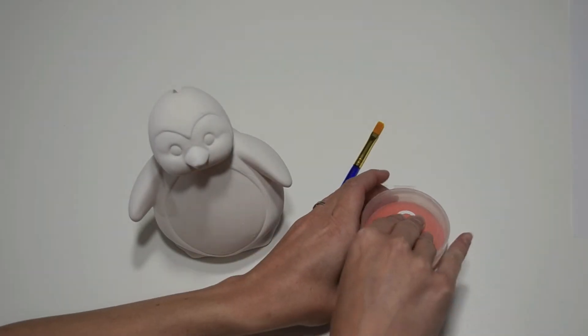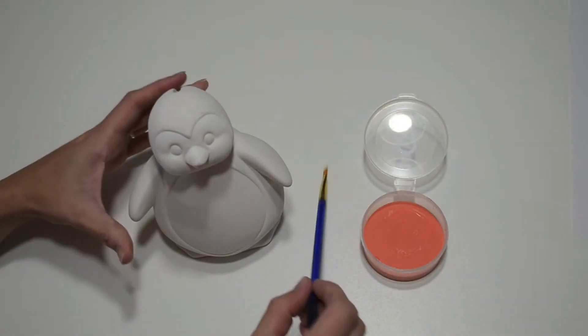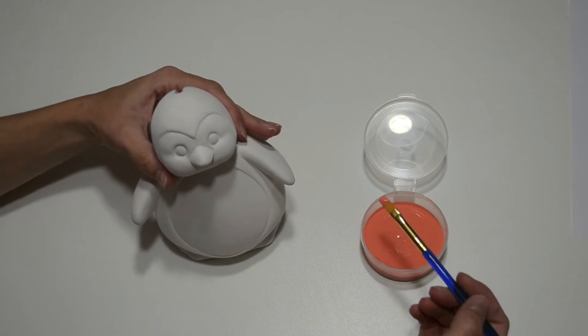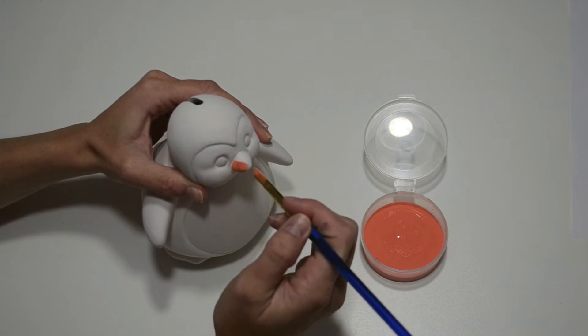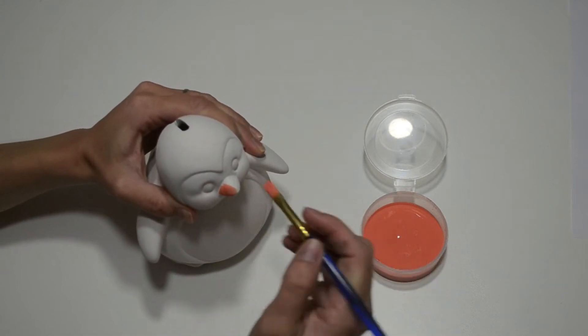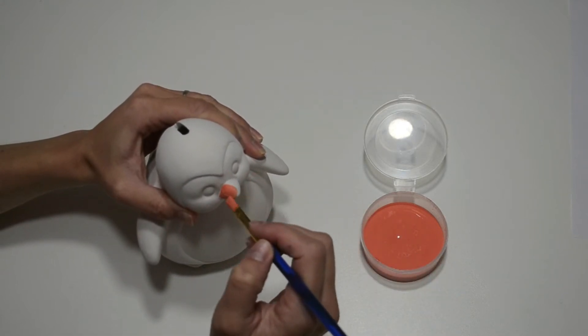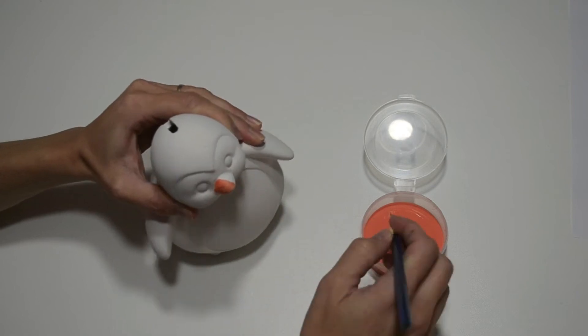Because I'm working from light to dark, orange is next. I'm applying three coats of paint to the beak and feet. Painting the beak and not getting any orange on the face can be tricky. A tip is to use a flat brush to help get a crisp line between the beak and the face.